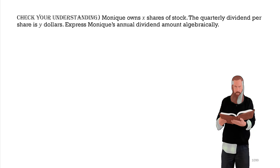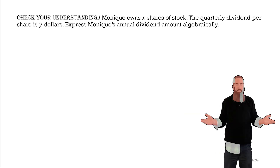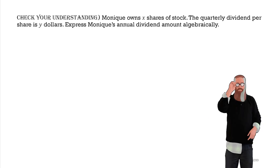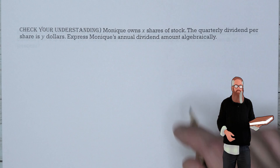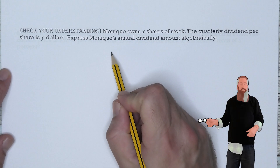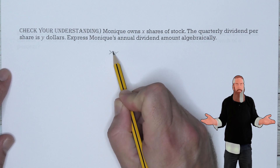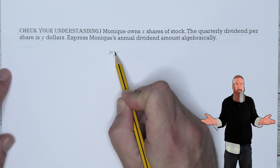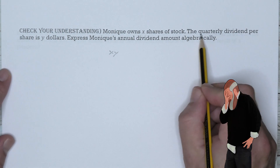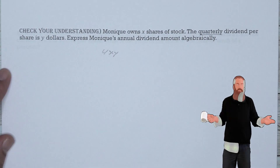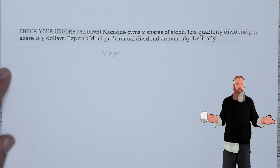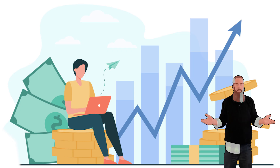Let's check our understanding. Monique owns X shares of a stock. The quarterly dividend per share is Y dollars. Express Monique's annual dividend amount algebraically. We know that X times Y gives the quarterly dividend amount. Since it's quarterly, we multiply by four to find the annual dividend amount: 4XY. To find the yield of a stock, write a ratio of the annual dividend per share to the current price per share, then convert to a percent.